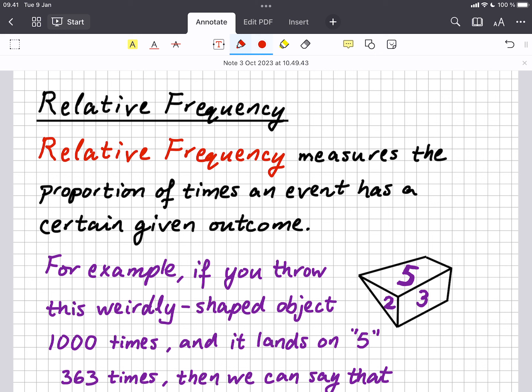The notes say relative frequency measures the proportion of times an event has a certain given outcome.